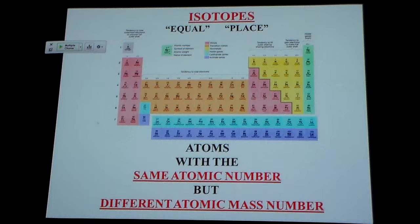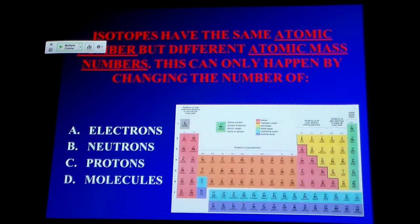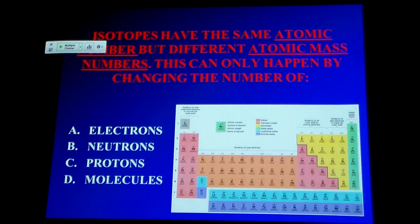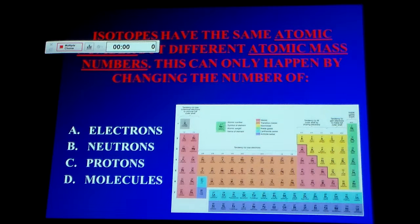Isotopes have the same atomic number but different atomic mass numbers. This can only happen by changing the number of what? 20 seconds.